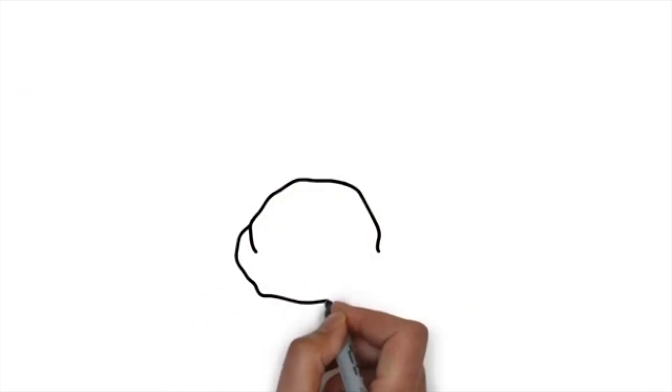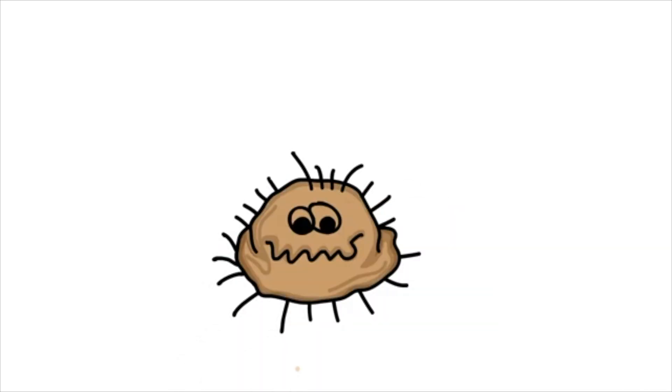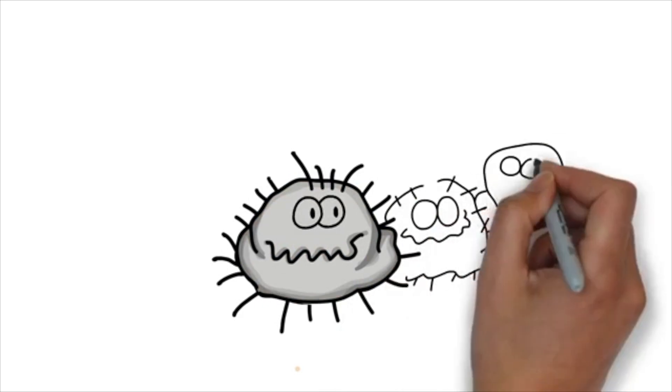The warts can often be easily identified because black pinpoints can give them a cauliflower-like appearance. These in fact are broken blood vessels. The warts may be flesh colored, white, tan, or even gray. Sometimes a cluster of them will form a mosaic-like pattern.